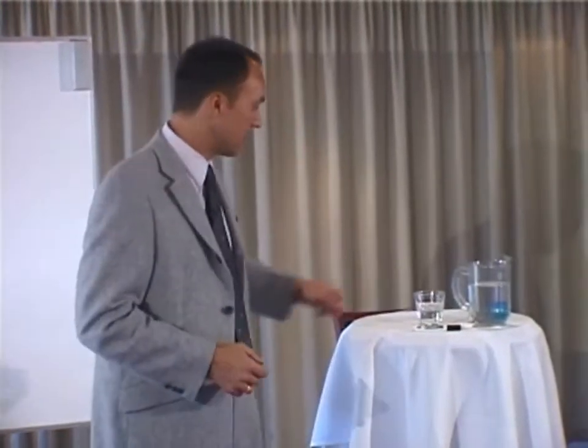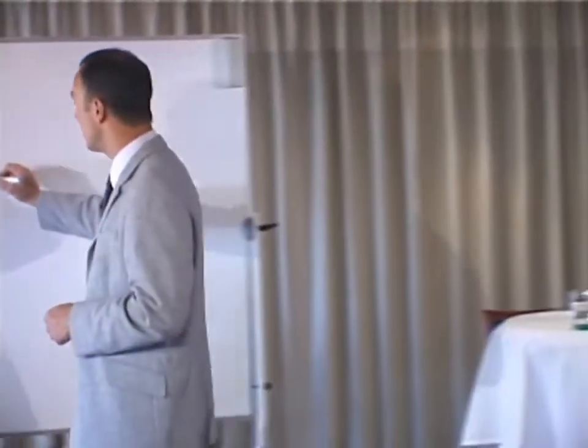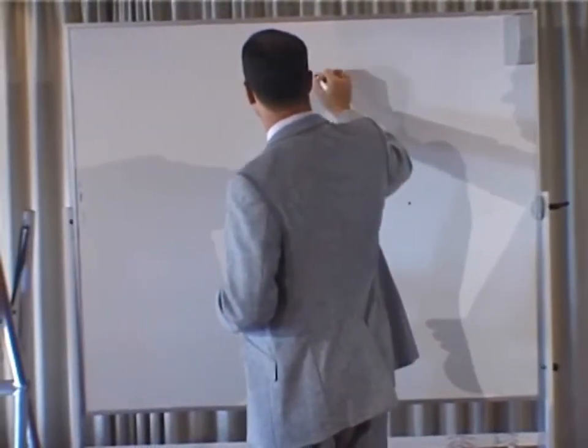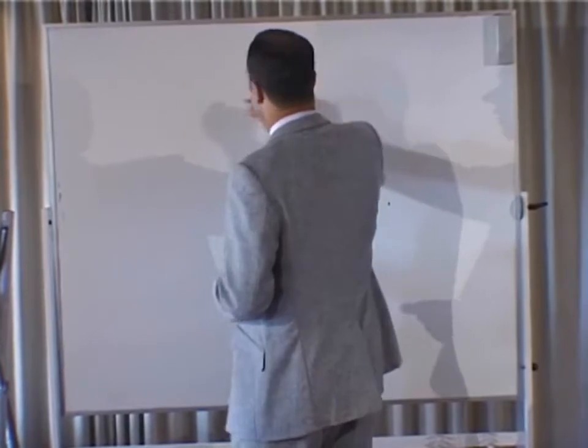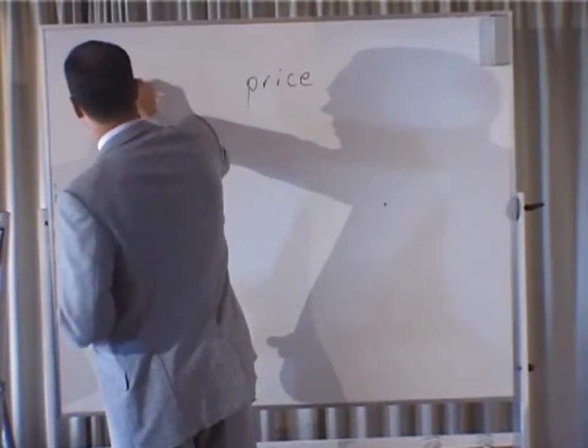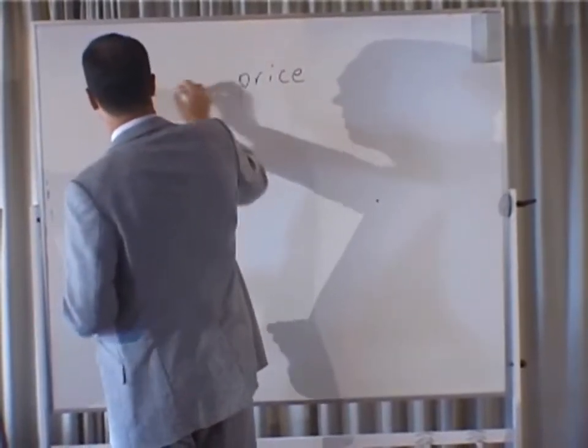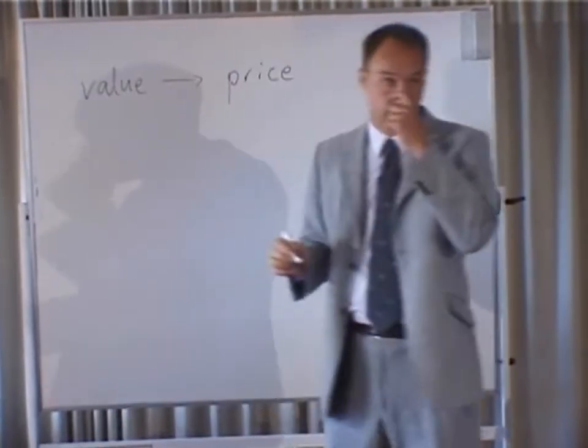Prices have traditionally been explained in terms of an underlying cause. The Austrians are famous for their approach — they belong to the marginal utility or marginal value school. They explain market prices in terms of an underlying reality they call value. Value, then, is the cause of price.